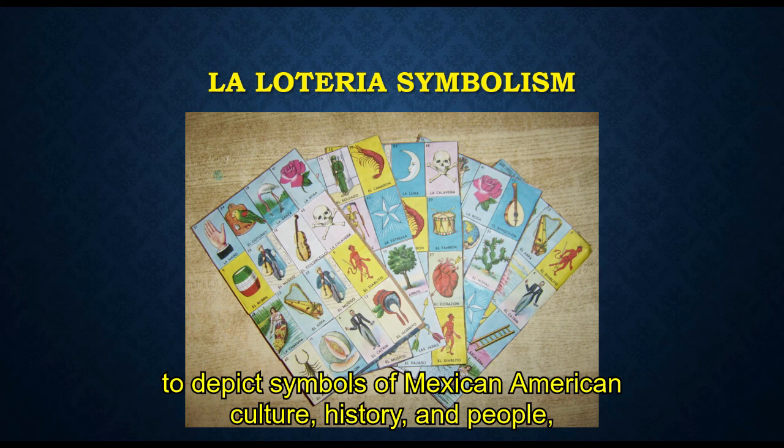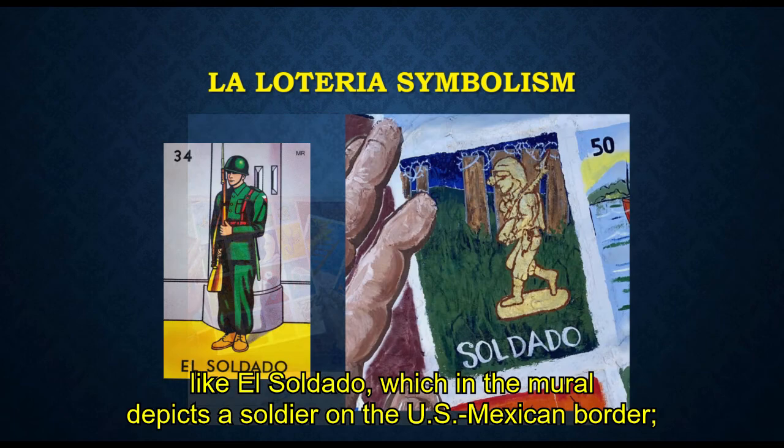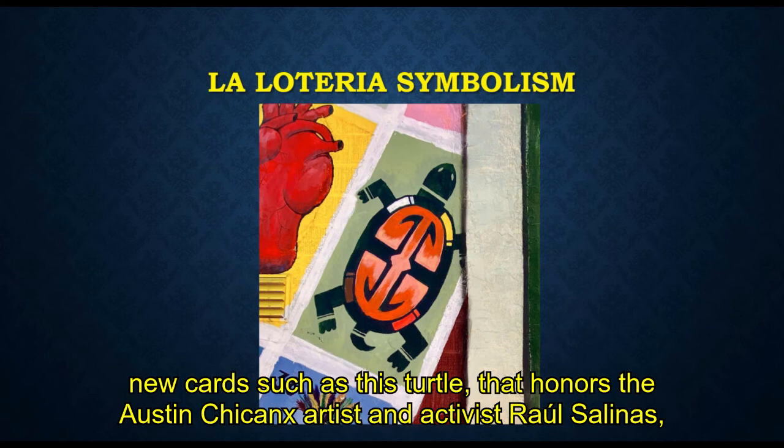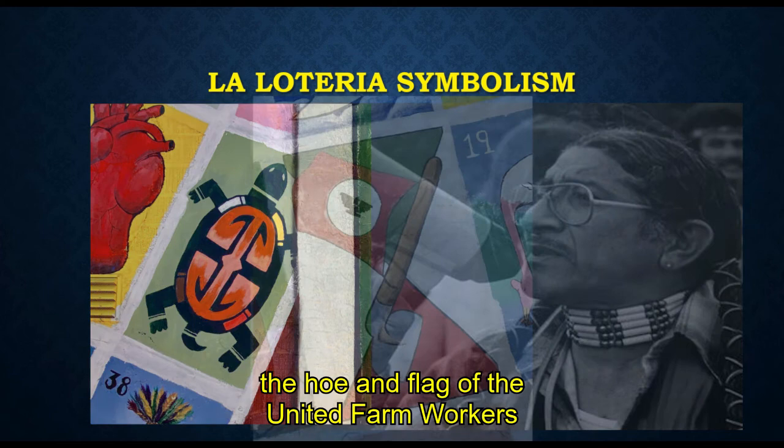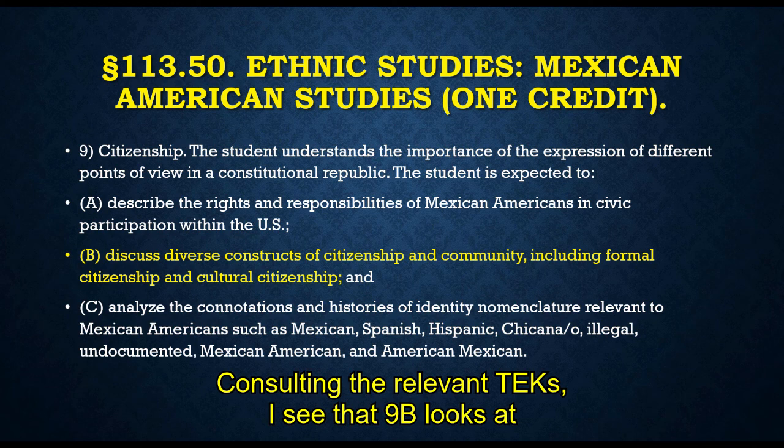It uses the Mexican game of Lotería, which is a type of pictogram bingo, to depict symbols of Mexican-American culture, history, and people — symbols that the artist intended the audience to be able to easily relate to. These include re-imaginings of traditional Lotería cards like El Soldado, which in the mural depicts a soldier on the U.S.-Mexican border, new cards such as a turtle that honors the Austin Chicanx artist and activist Raul Salinas, the home and flag of the United Farm Workers that pays homage to Dolores Huerta and Cesar Chavez, and even Chavo, the beloved Mexican TV character.